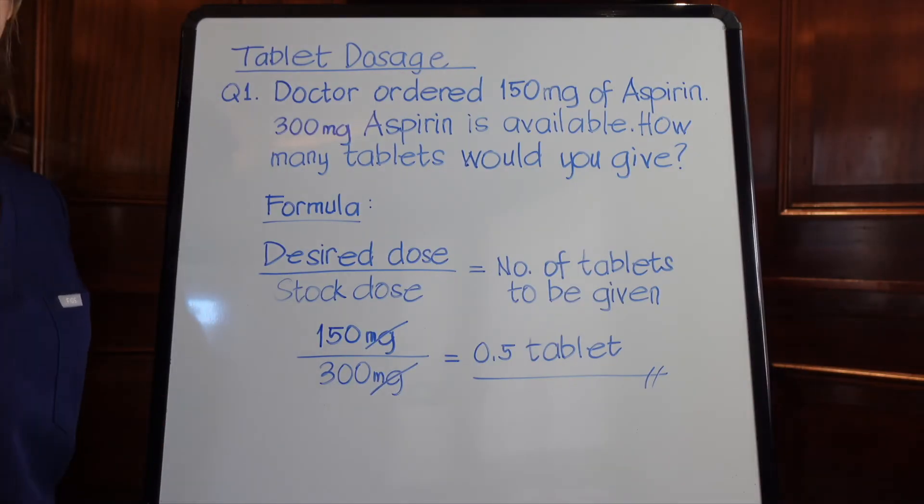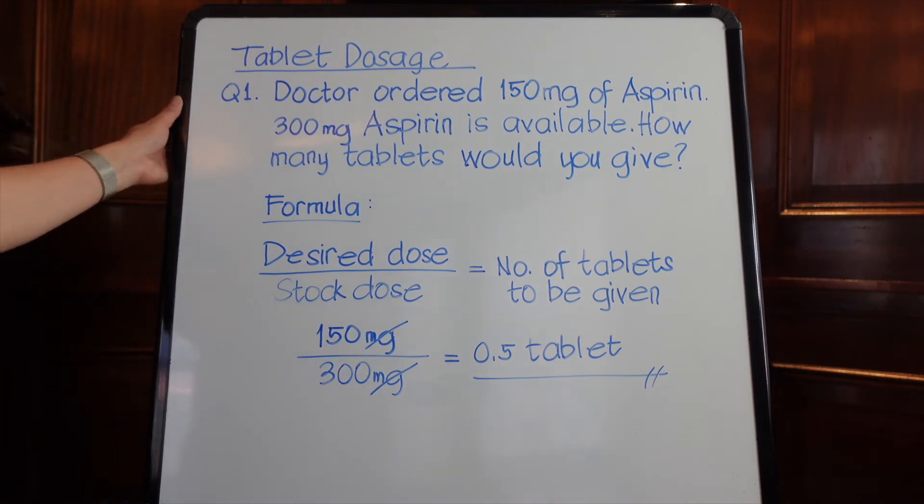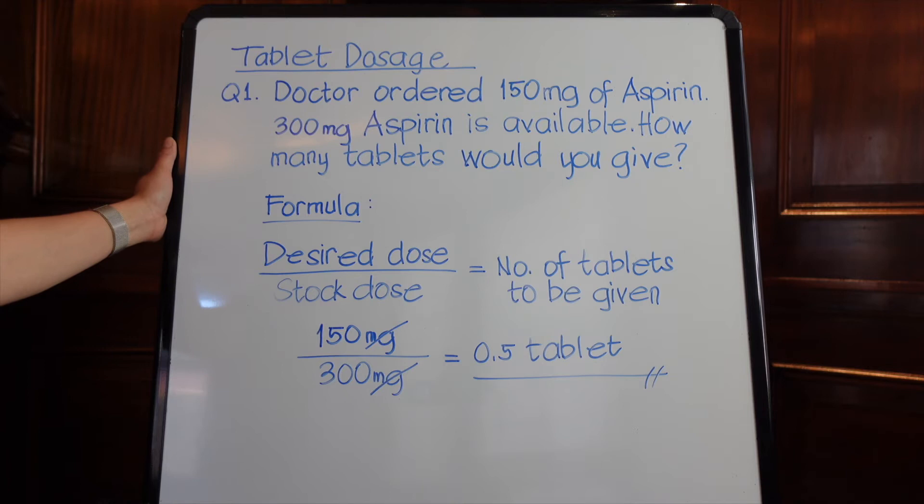Now let's apply these five steps to calculating medication doses. I'll break it down for tablet dosages, mixtures and solutions, and intravenous rate. Bear in mind these are simple examples to help guide you. The drug calculations we're focusing on are the dosages most likely encountered when practicing as a registered nurse in Australia, and are particularly helpful for overseas qualified nurses taking their OSCE.